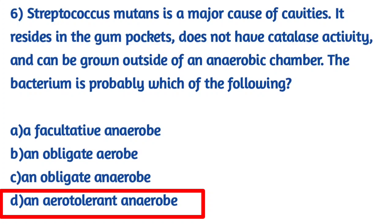Aerotolerant anaerobes use fermentation to produce ATP, meaning they do not require oxygen for metabolism and do not use catalase activity. However, they protect themselves from reactive oxygen molecules. Examples include Lactobacilli and Streptococci. These bacteria can survive in the presence of oxygen without using it.